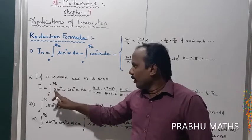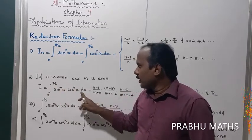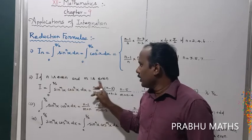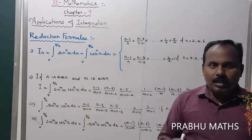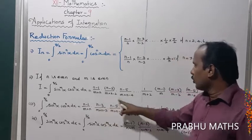Integral 0 to π/2 sin power n x dx. Suppose n is an even number and m is an even number. Sin θ power even, cos θ power even. Use this formula.